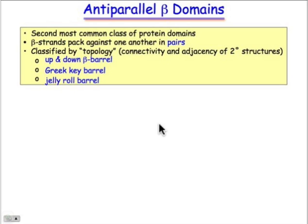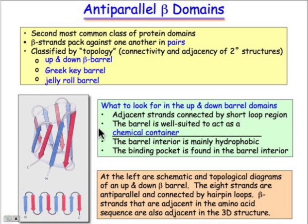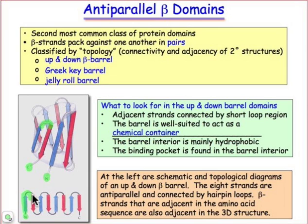The up-and-down beta barrel is really a chemical container. If you just follow from the N-terminus to the C-terminus, you can see that it's a strand followed by a beta turn — that tight turn we talked about in a previous webcast — that turns into a beta strand, loops around again with a very tight beta turn, and forms alternating anti-parallel beta sheet structures. The sheet comes back and loops onto itself to form a completely closed cylinder-like structure.